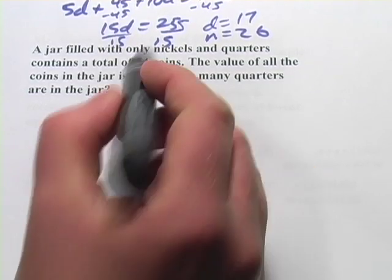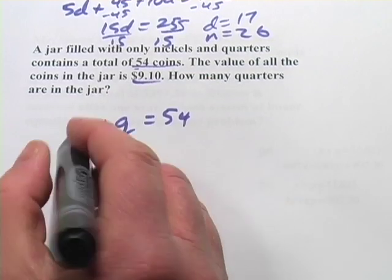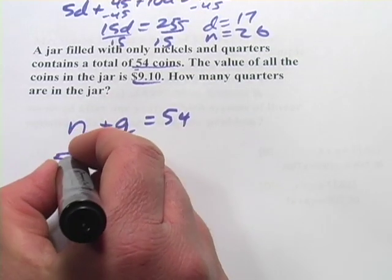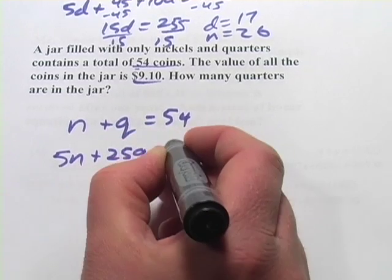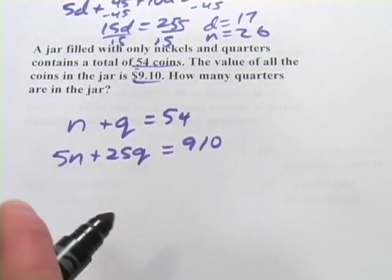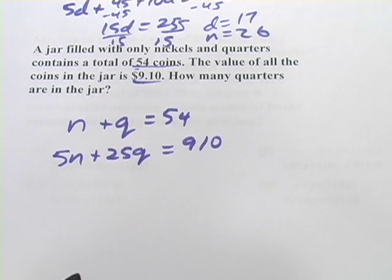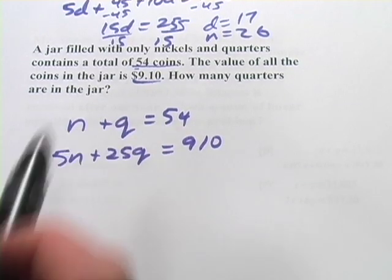And then the value is nine ten. Again, I'm going to convert to cents here, so we've got five times nickels plus twenty-five times the number of quarters equals nine hundred and ten cents. And at this point, let's see, it says how many quarters are in the jar.